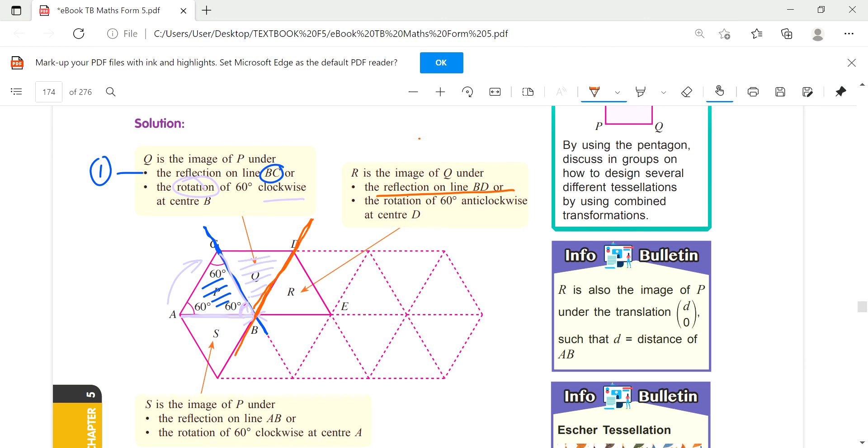From Q to R, and also you know this is 60 degrees, so the rotation - R is the image, and then it's a rotation of 60. Why anticlockwise? Should be clockwise. It's center - oh, center D. If D is the center, so of course it's anticlockwise.